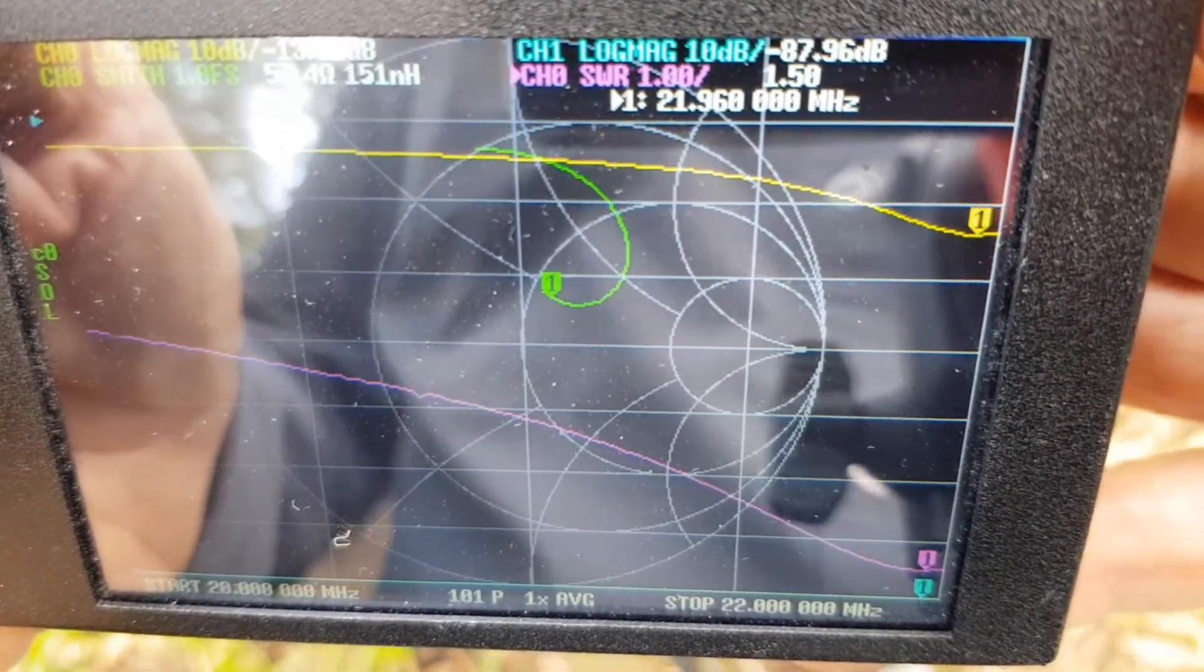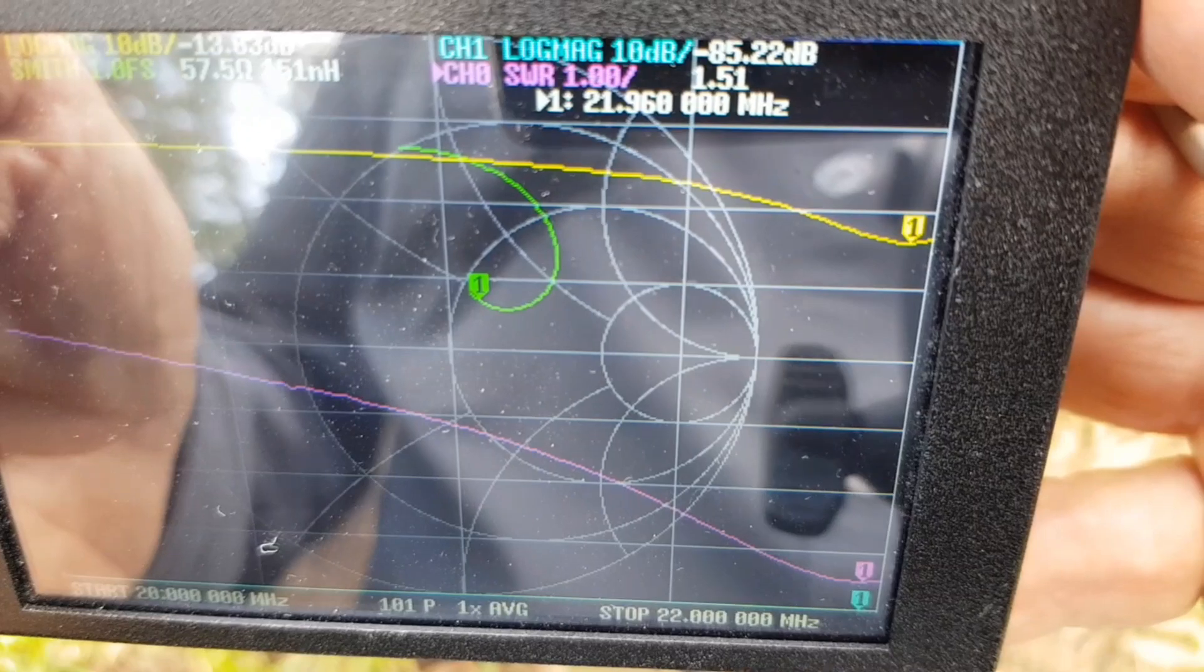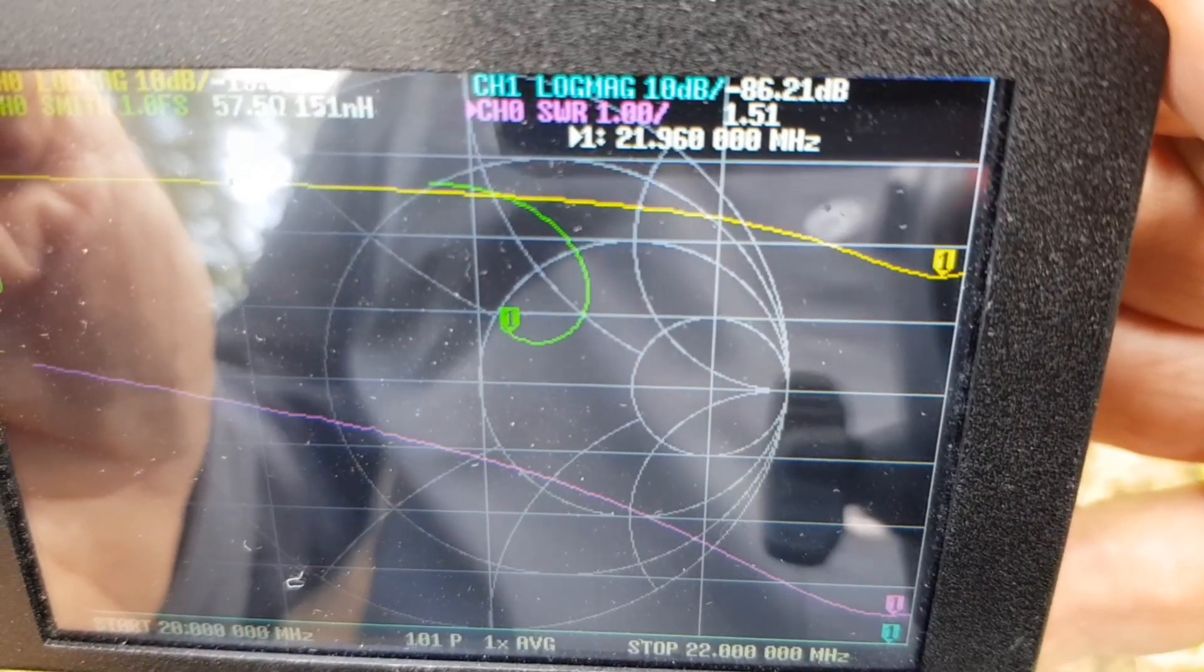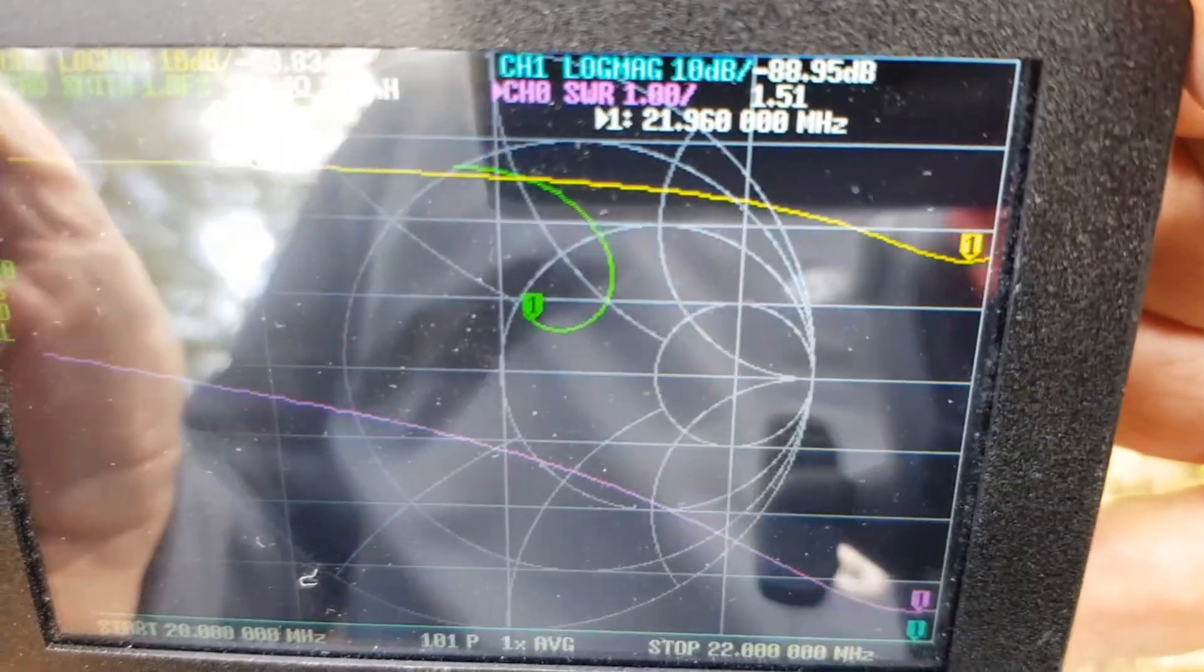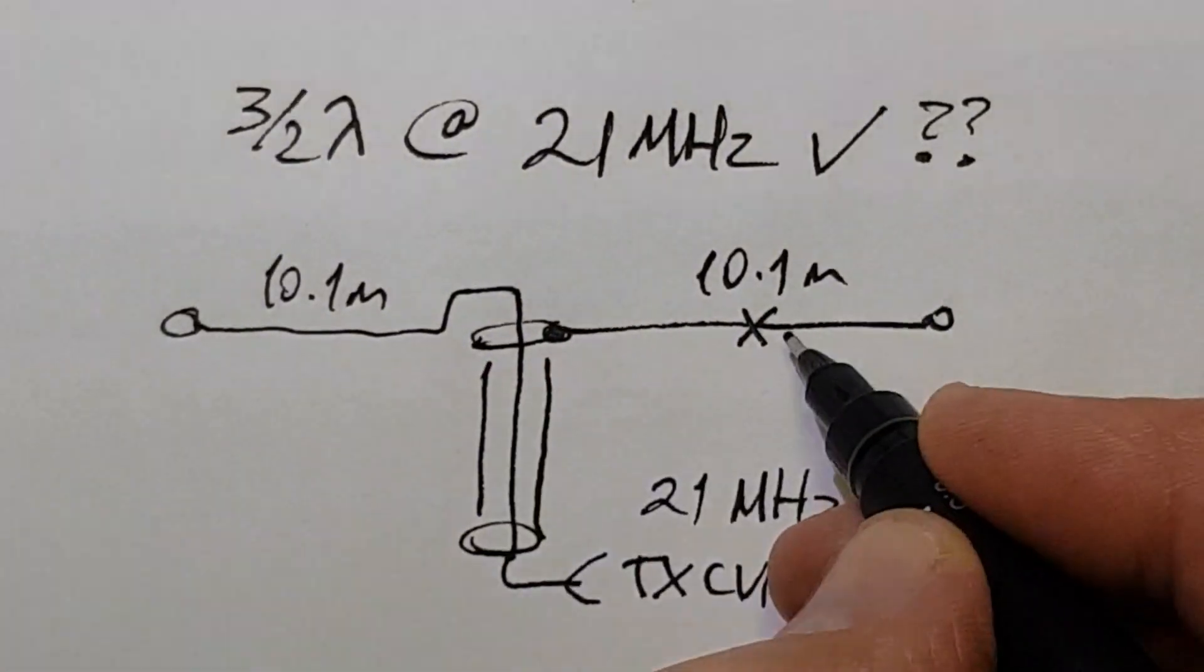And that's at 21.96 megahertz, nearly 22 megahertz. So there is a resonance there, but it's way too high. It's nearly a megahertz too high. Because you have the brake there ready to be utilized.